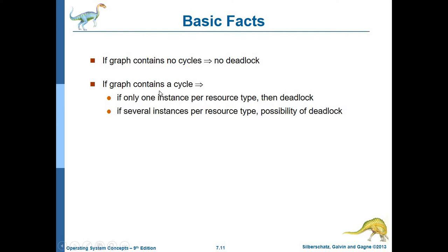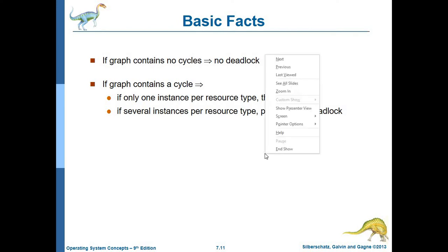When the resource allocation graph has a cycle, and the first resource type has a single instance, then the first loop has a cycle and it is a deadlock. But if the resource type has multiple instances, then the deadlock may or may not exist. So if there is a cycle but multiple instances, the deadlock is not necessarily confirmed.